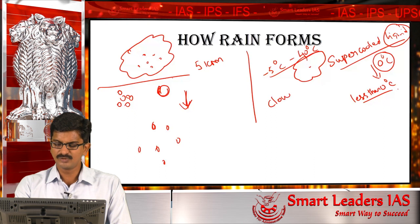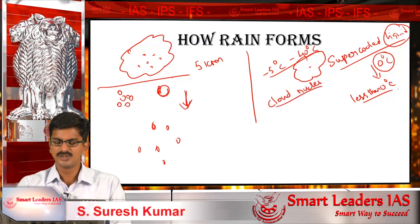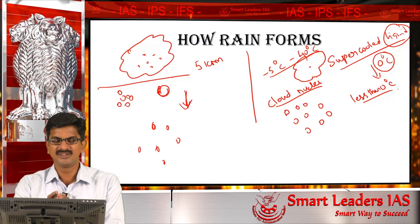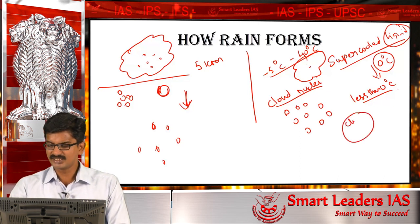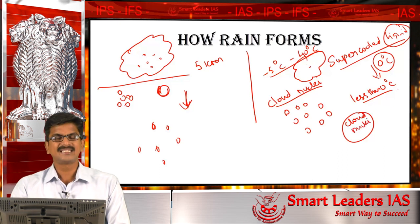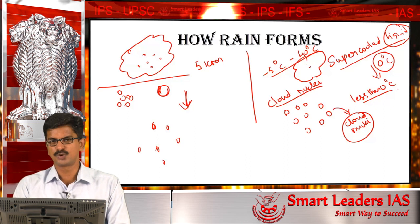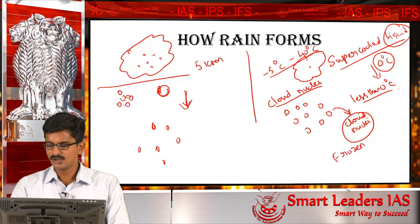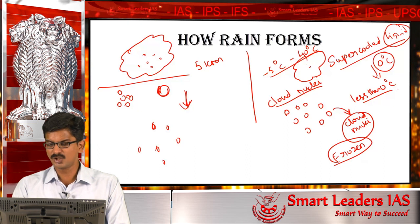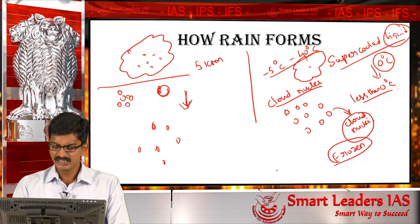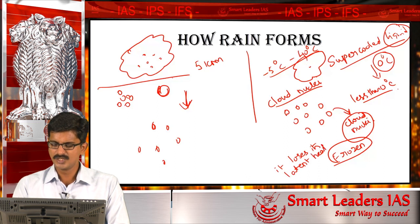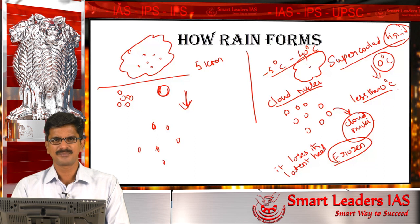This is where cloud nuclei come into the picture. This water vapor — supercooled liquid in the clouds — needs something to begin with. When a small particle called cloud nuclei is available, these water droplets will go and stick to it. Once it sticks, it immediately becomes frozen. Why does this happen? Because when a supercooled liquid comes into contact with the cloud nuclei, it loses its latent heat, causing it to freeze.